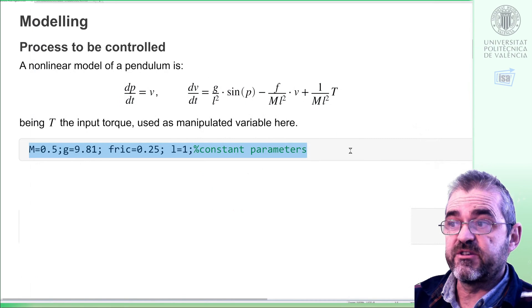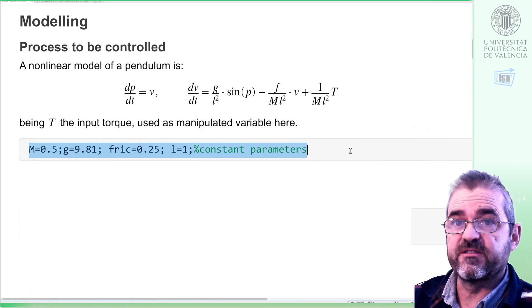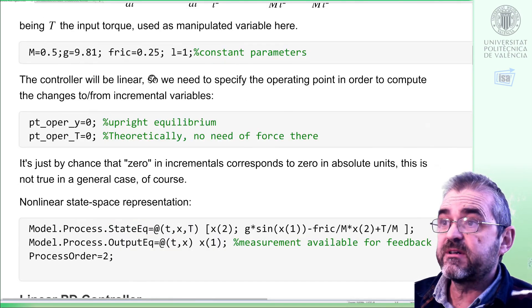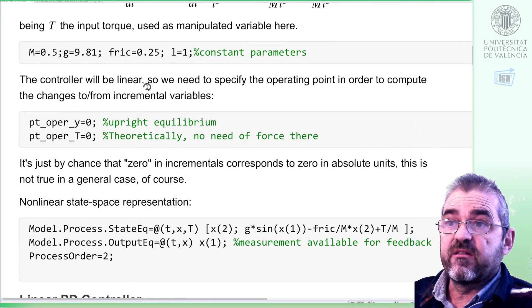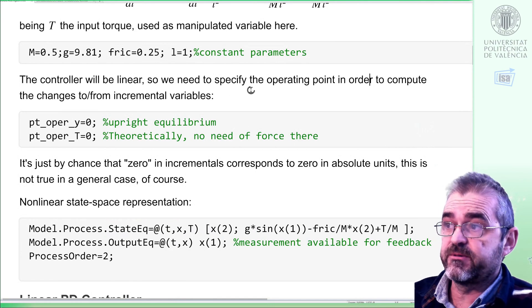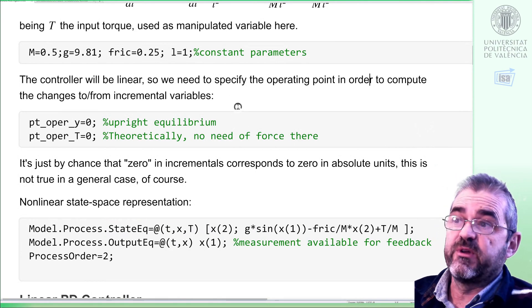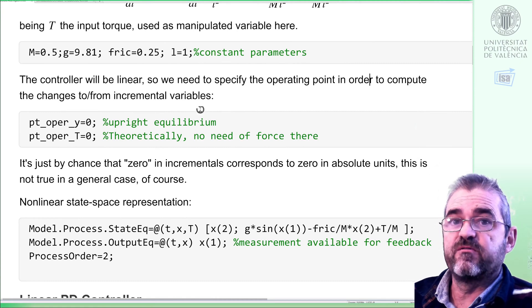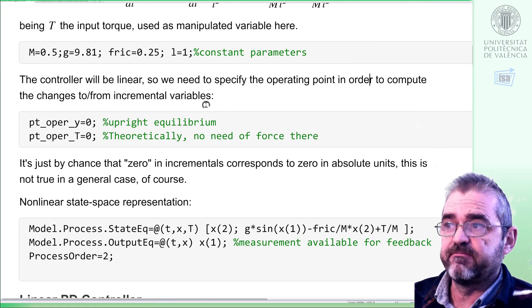Constant parameters for simulation—length, friction coefficients, gravity, mass—will be fixed in this line. As the PD controller will be a linear one, we need to specify the operating point in order to compute changes to incremental variables and from incremental variables needed for linearized operation. However, in this particular case,